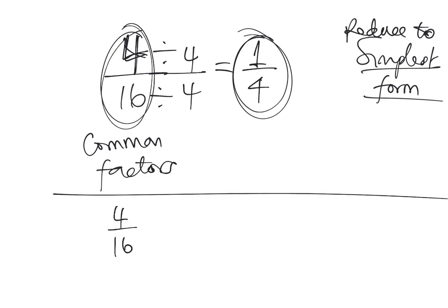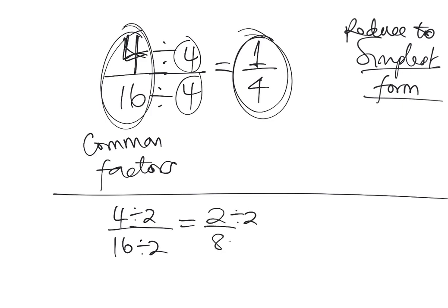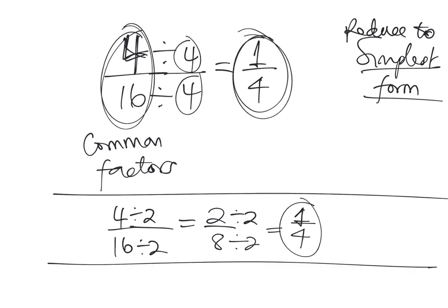If you don't know the greatest common factor right away, start with what you know. For 4/16, you know 2 is a common factor. Divide by 2 to get 2/8, then divide by 2 again to get 1/4. You can go step by step. As you get more comfortable with numbers and greatest common factors, you'll automatically recognize the GCF. That comes with practice.